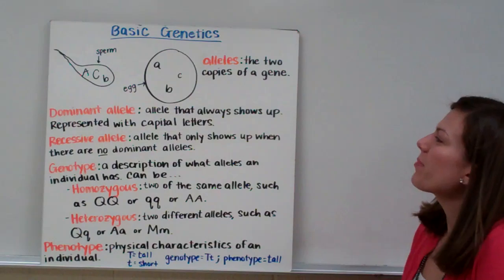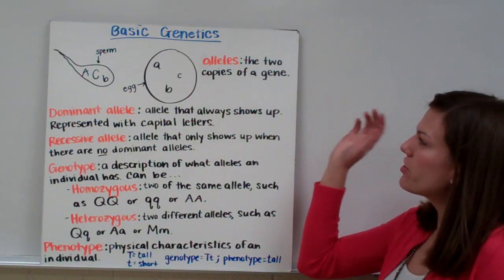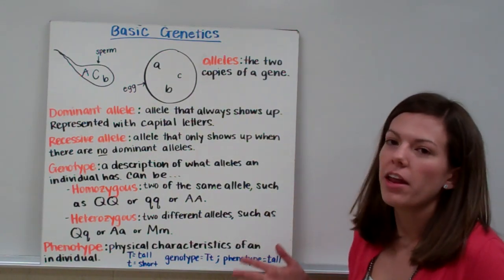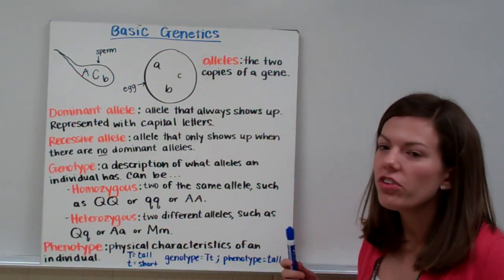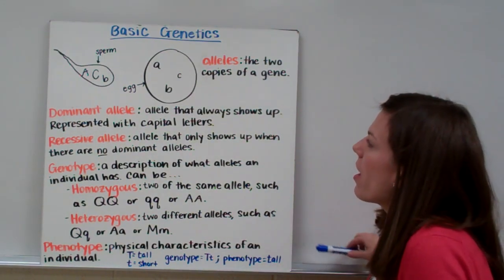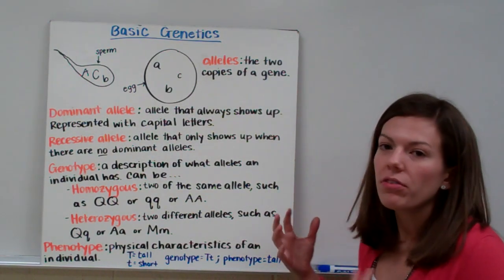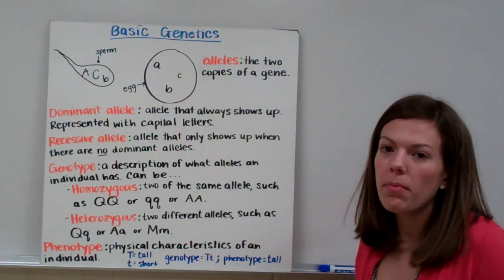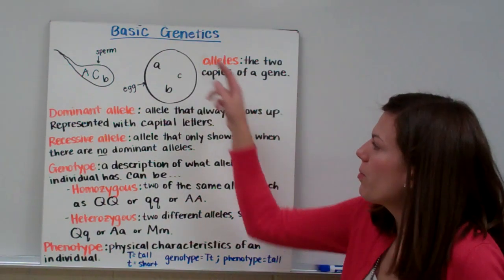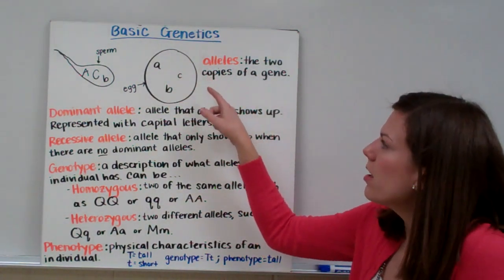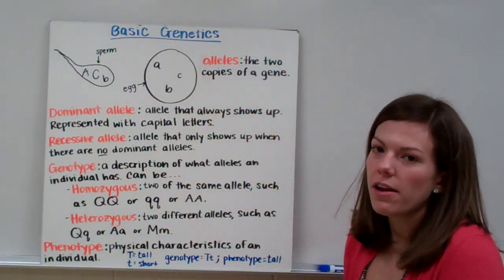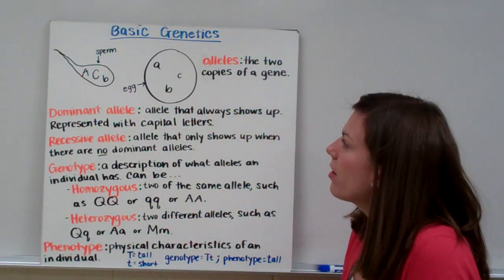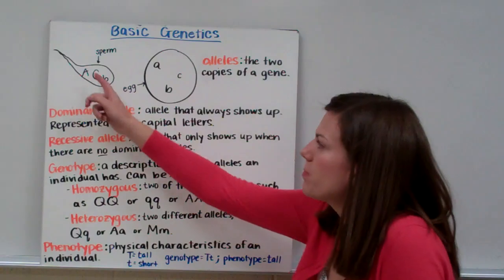Basic genetics. In order to understand how genetics works, you need to know that you get half of your DNA from your mom through your mom's egg, and half of your DNA from your dad through your dad's sperm.